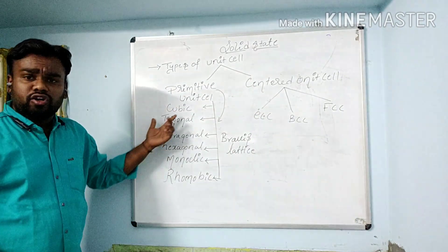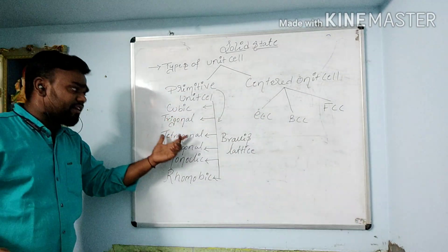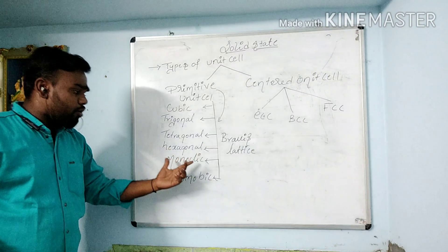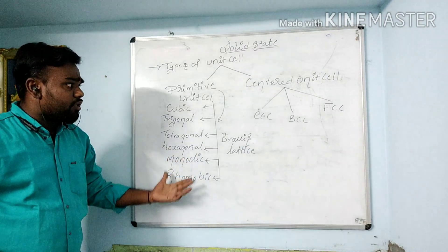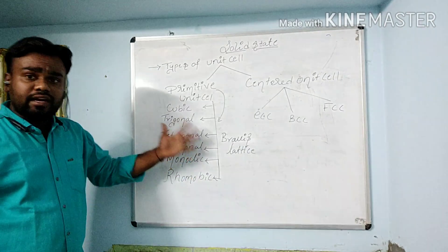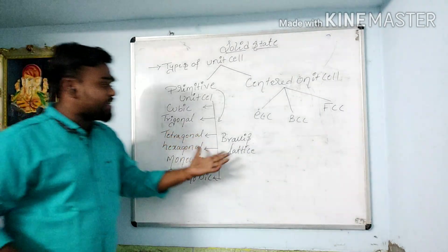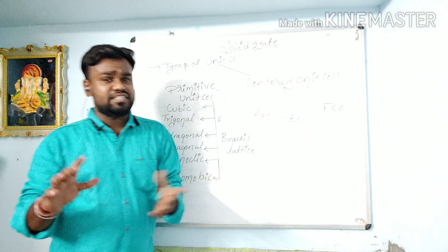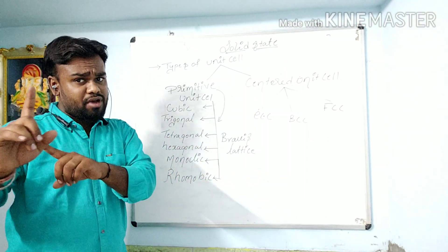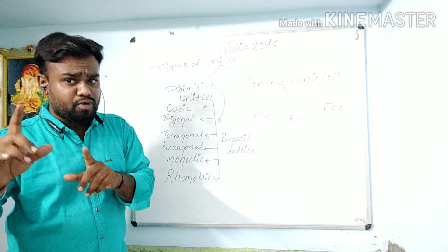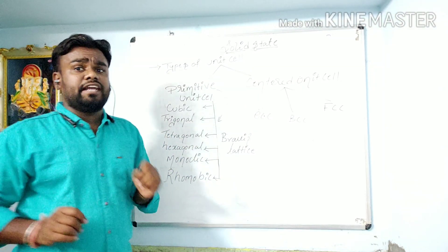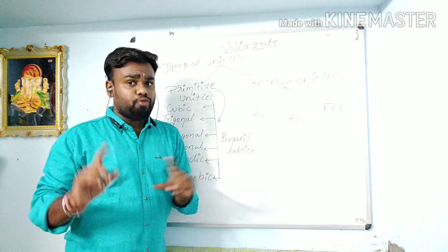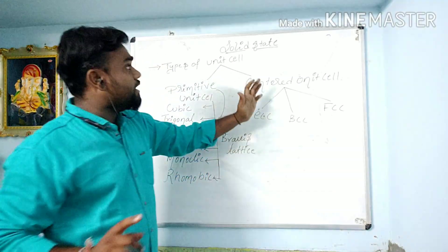The seven crystal systems are: cubic, triclinic, tetragonal, hexagonal, monoclinic, and rhombohedral. These are further classified into Bravais lattices — 14 Bravais lattices. Please remember, this is very very important for NEET — 14 Bravais lattice points.